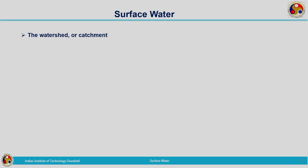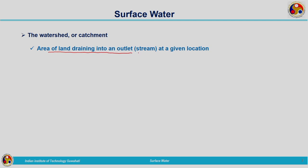What is surface water? From the name itself it is clear that water which is present on the surface of earth is termed as surface water. We need to study the hydrologic processes related to surface water in this module. We have seen what is meant by a catchment, watershed, or catchment basin — all representing the same entity. A watershed is defined as the area of land draining into an outlet, which can be any water body such as streams, rivers, or oceans at a given location.